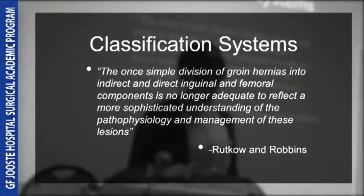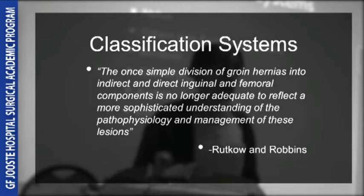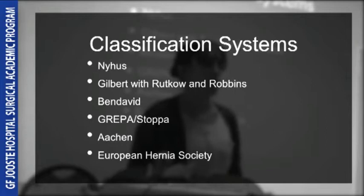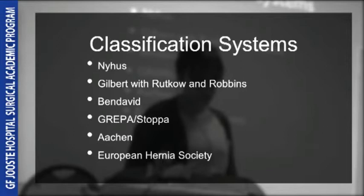Classification systems give more detailed descriptions of hernia size, the state of the internal ring or posterior wall, and make allowances for things such as pantaloon hernias — which have both a direct and an indirect component — and recurrent hernias. The Nyas classification was proposed by Chicago surgeon Lloyd Nyas in 1991, based on anatomic criteria focusing on the functional state of the internal ring and the posterior wall. The Gilbert classification, with additions by Ratko and Robbins, is based on anatomical and functional defects found intraoperatively.